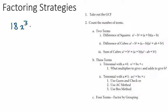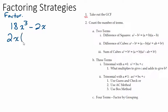We have 8x cubed minus 2x, and we want to factor it. This first step is really really important — every single problem, you need to ask yourself: does this polynomial have a greatest common factor? No matter what you're going to do next, always check for a greatest common factor first. I've got two terms — a binomial. It looks like 8 and 2 both have a factor of 2, and I've got x cubed and x, so that's a common factor of x.